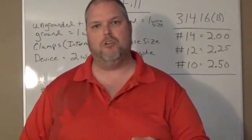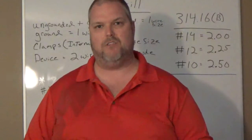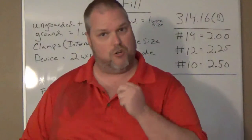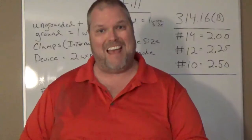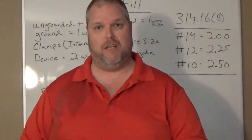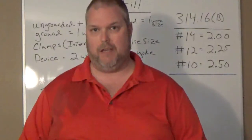And then our device, you get it. It's counted as two. So we actually have 10 conductors that we're going to size. So how do we figure this out? What we're going to do is we're going to take two, which is our two cubic inch volume per conductor. We have 10 conductors. We're going to take that 10, multiply it by two, and that's going to give us a volume of 20 cubic inches.